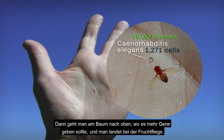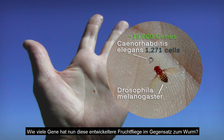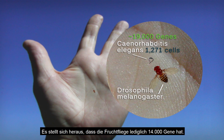Going higher up the tree, there are supposed to be more genes. We end up with the fruit fly — another major species studied by geneticists in understanding heredity. How many genes does this more advanced fruit fly have over the worm? It turns out the fruit fly has only 14,000 genes.